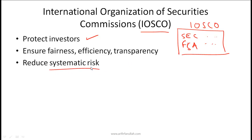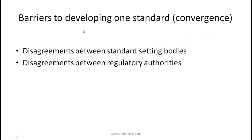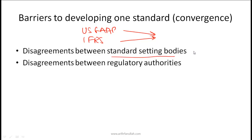US GAAP and IFRS are trying to converge, but what are the potential barriers? Simplistically, there are two straightforward barriers. One has to do with disagreements between standard setting bodies — that is, FASB and the International Accounting Standards Board. The other is disagreement between different regulatory authorities around the world, such as the SEC in the US and regulatory authorities in other parts of the world.